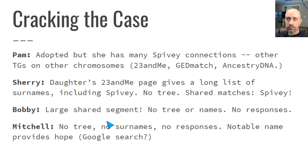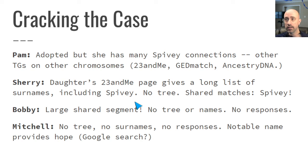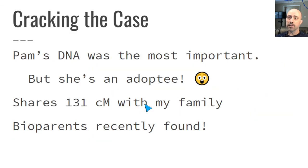Mitchell also has no tree, listed no surnames, and never responded to any of my messages. But his name stood out enough that I was encouraged to pursue the research on him. Because he has a Hispanic surname, that really helped cut through a lot of clutter — he wasn't blending in with the rest of my matches who have predominantly British and German ancestry. I did a simple Google search and managed to find him and his ancestry. I'll talk about that in a minute.